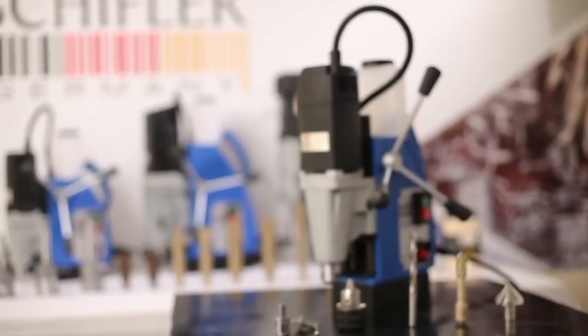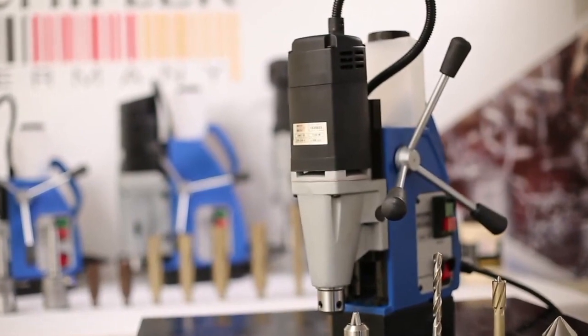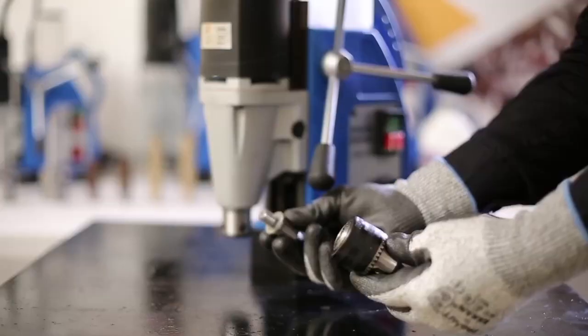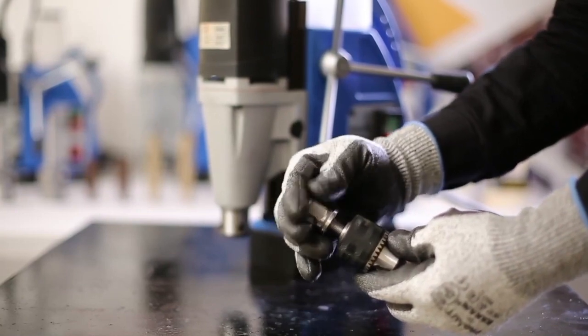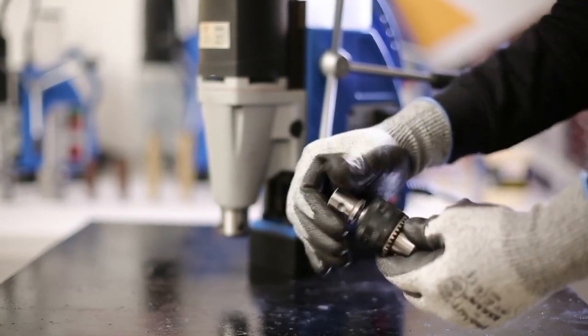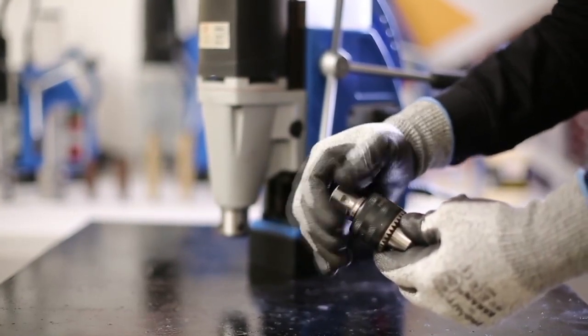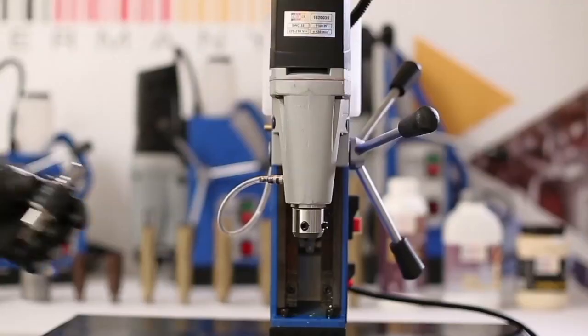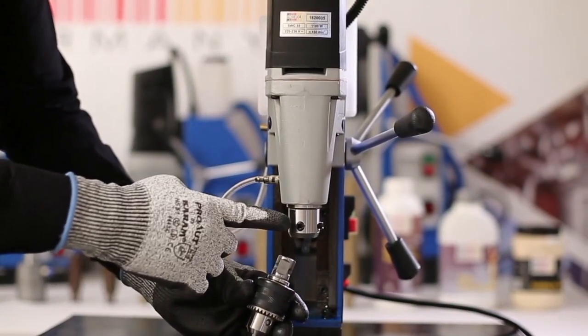Now you are ready to use your Schiffler Magnetic Drilling Machine. Drilling with twist drills: use the drilling adapter to tighten into the drill chuck as shown. Tighten the screw on the flat surface as demonstrated.